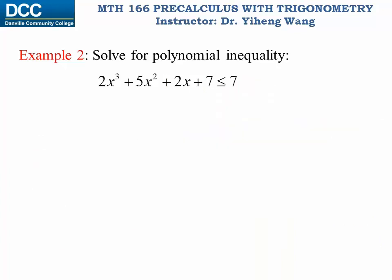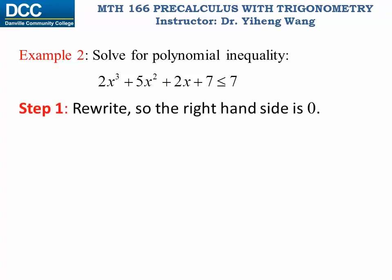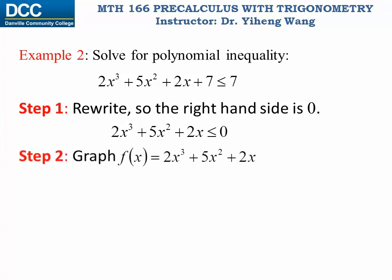Let's look at another example: 2x cubed plus 5x squared plus 2x plus 7 is less than or equal to 7. With the graphical method, the x-axis corresponds to a function value of zero, so we need to make the right-hand side equal to zero. We rewrite the inequality as 2x cubed plus 5x squared plus 2x less than or equal to zero. This is exactly the same as the original inequality.